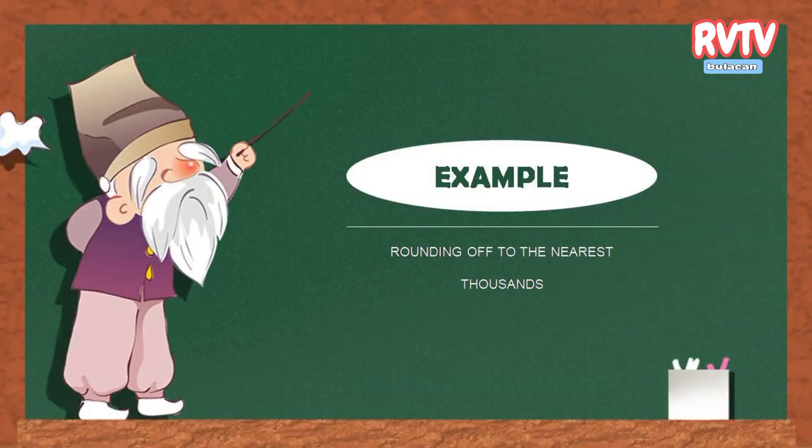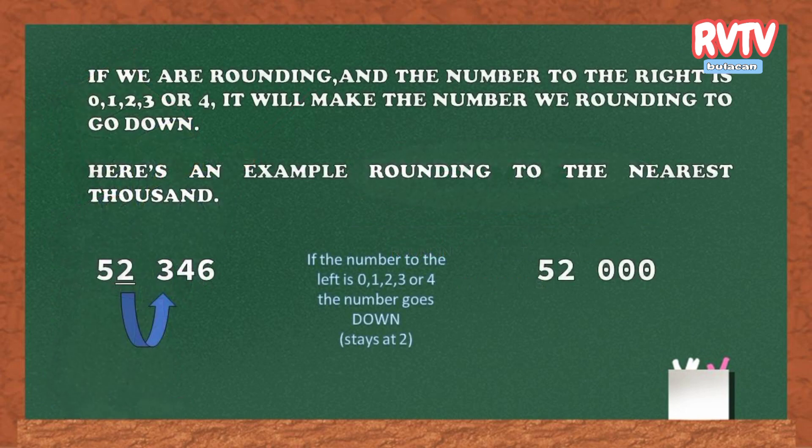Here are examples of rounding numbers to the nearest thousands. If we are rounding and the number to the right is 0, 1, 2, 3, or 4, it will make the rounding go down.